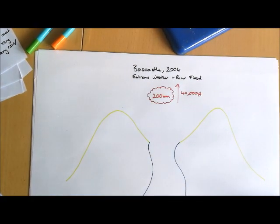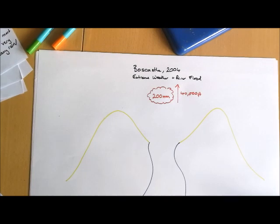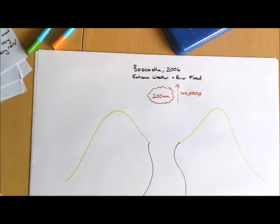What we're talking about there is probably two times, three times the monthly rainfall of August falling just in 24 hours. Obviously that intense rainfall is going to saturate the ground. It's therefore going to prevent infiltration, which increases surface runoff, which increases the speed at which water enters the river, making it more likely to flood.